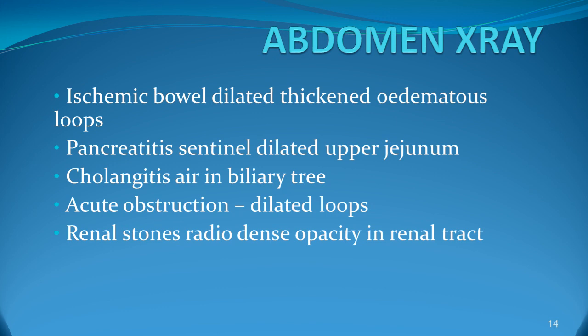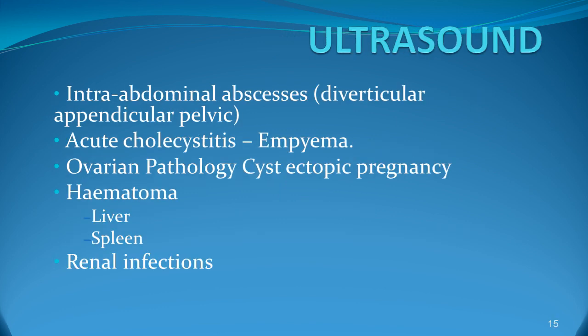Renal stones can be seen as radio-opacity in the renal area and renal tract. Intra-abdominal abscesses like diverticular, appendicular, and pelvic abscesses can be found. Acute cholecystitis and empyema can be diagnosed on ultrasound, along with ovarian pathology, cysts, and ectopic pregnancy. Haematoma of the liver, spleen, abscesses of the liver, and renal infections can also be diagnosed with ultrasound.